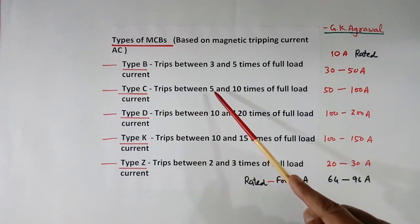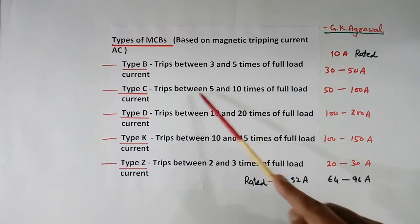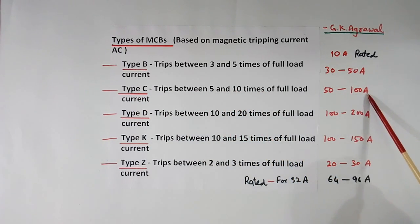Type C will trip between 5 and 10 times, means 50 to 100 A. Type D trips between 10 and 20 times. 10 means 100, 10 times. 20 times means 20 times. This is 10 A, this is 200 A. So type D will trip between 100 and 200 A for this MCB.